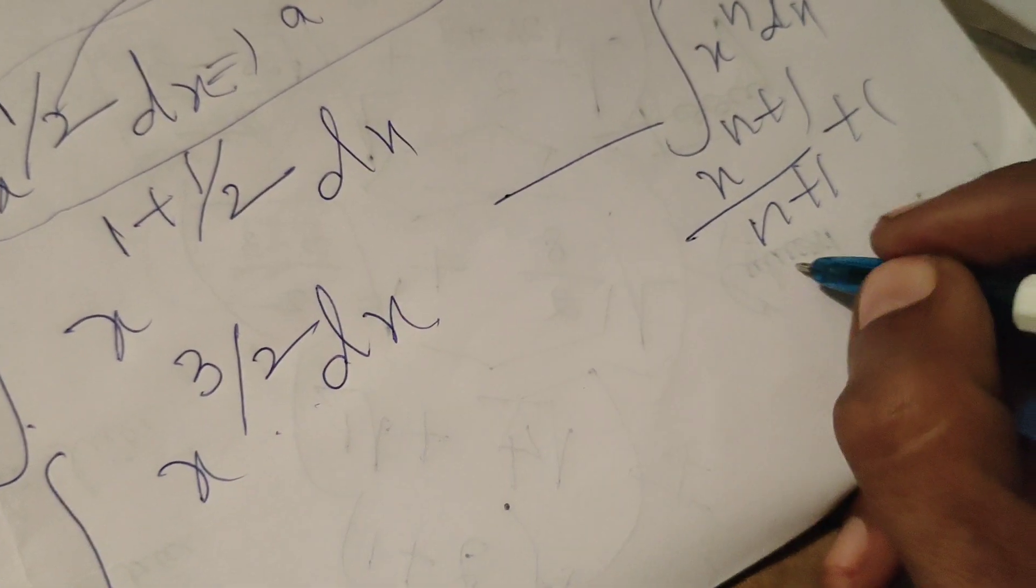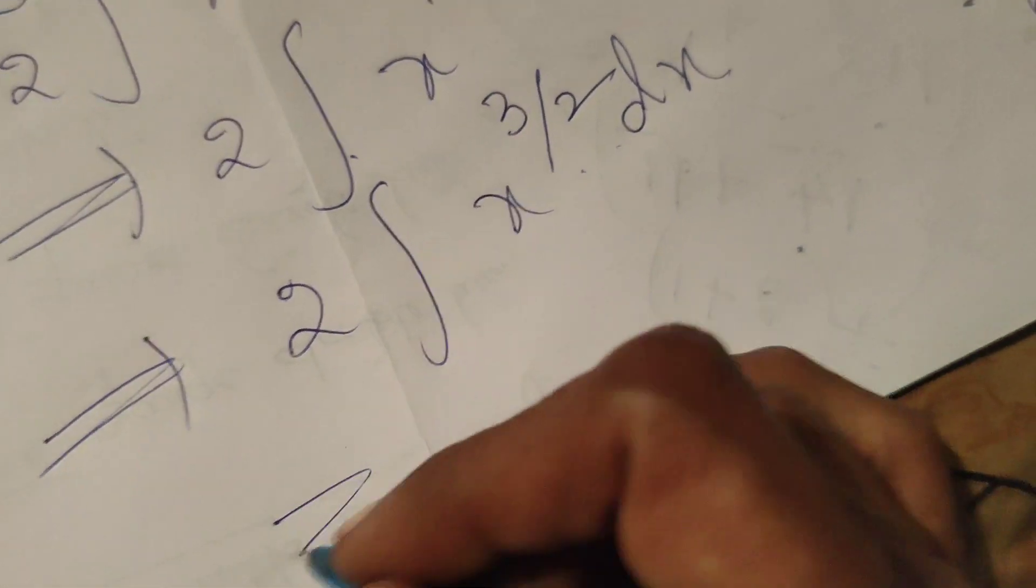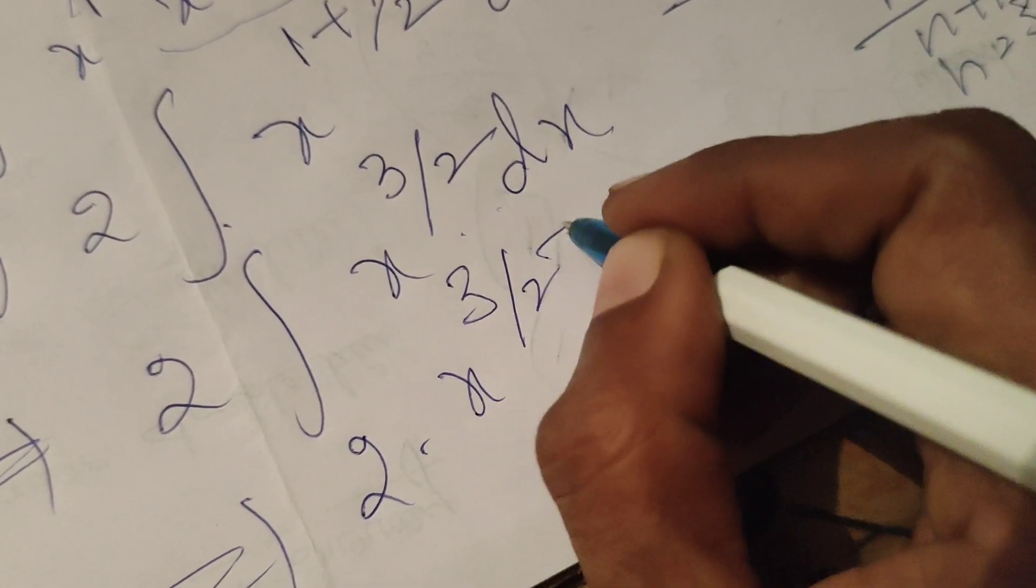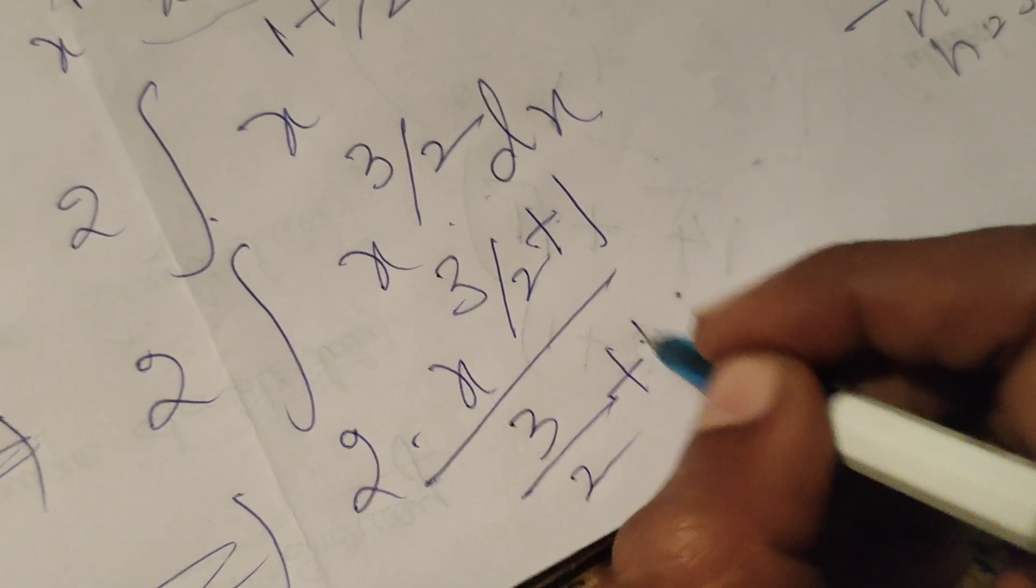Here N means 3 by 2. Therefore 2 into x power 3 by 2 plus 1 by 3 by 2 plus 1 plus C.